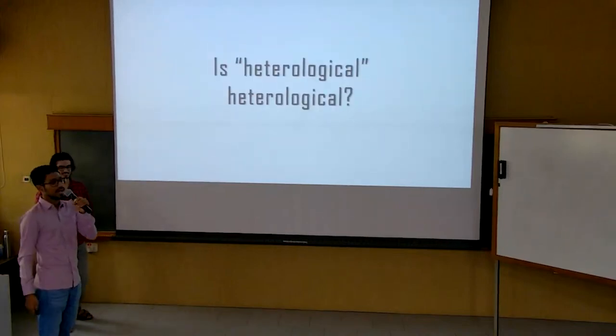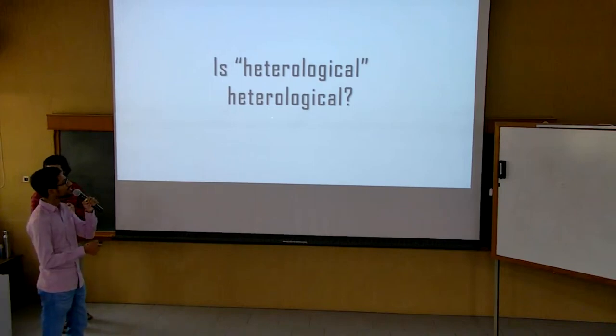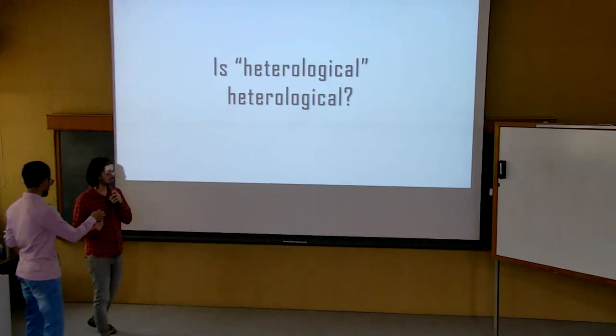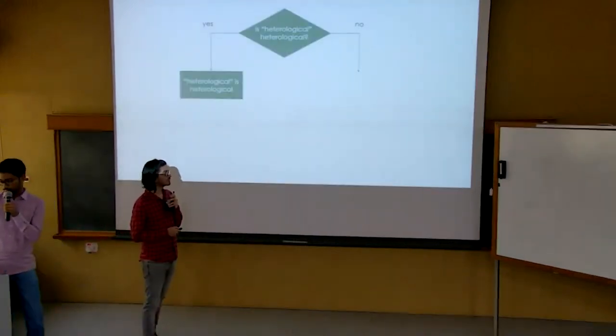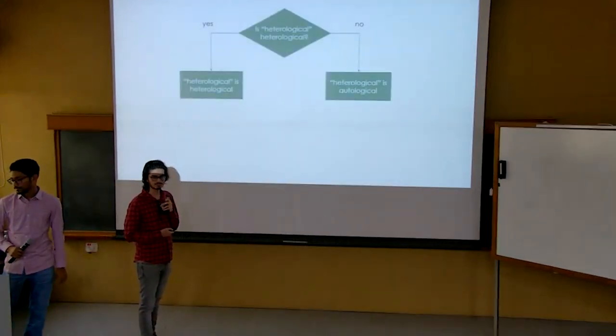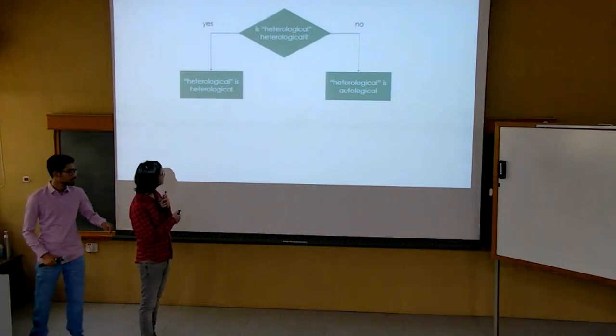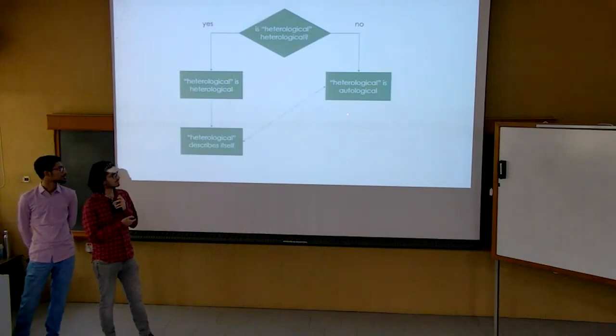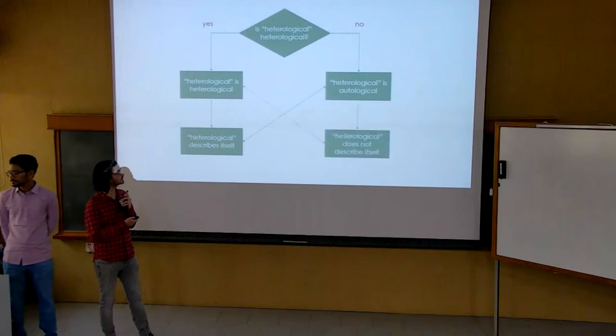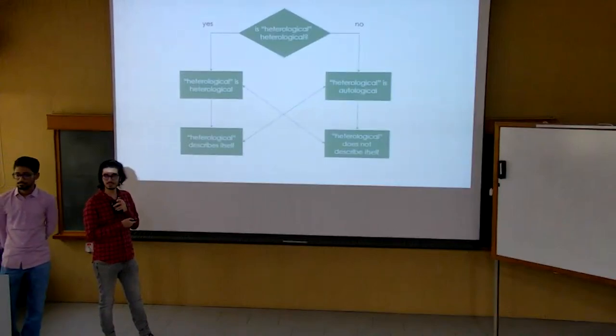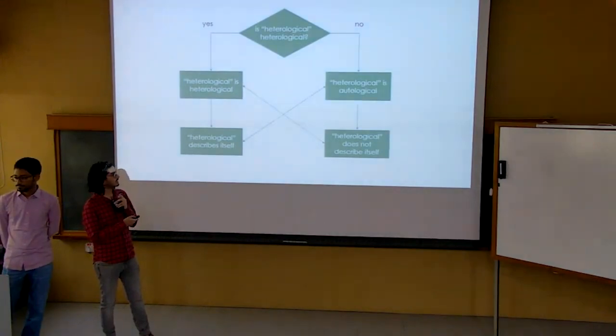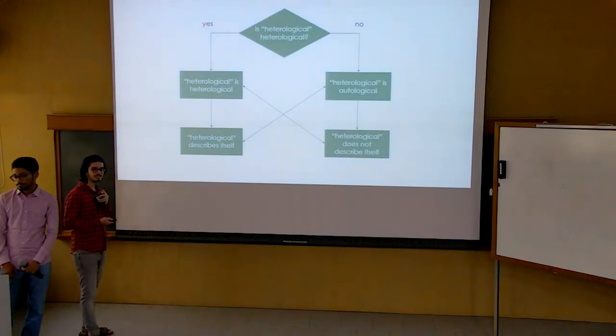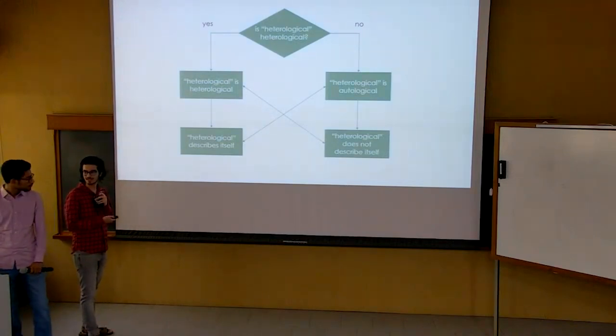The key question the paradox asks is: Is heterological heterological? Well if yes, it is heterological. If no, it is autological. But if heterological is heterological, it describes itself, and so by definition it is autological. But if heterological is autological, then it does not describe itself, and so by definition it is heterological. Either way we run into a contradiction and get stuck in this infinite loop. So both possibilities are actually impossibilities, and that is the paradox.